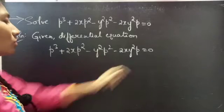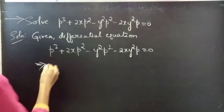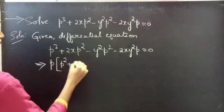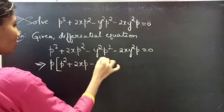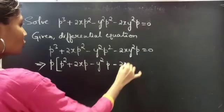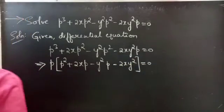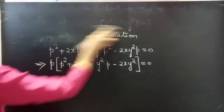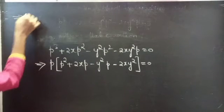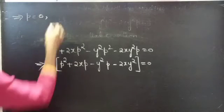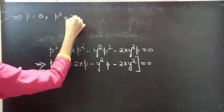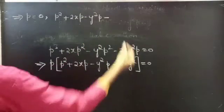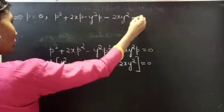Since P appears in all the terms, we'll take P common from all of them. We get P times (P squared plus 2xP minus y squared P minus 2xy squared) equals zero. This gives us P equals zero, and P squared plus 2xP minus y squared P minus 2xy squared equals zero.